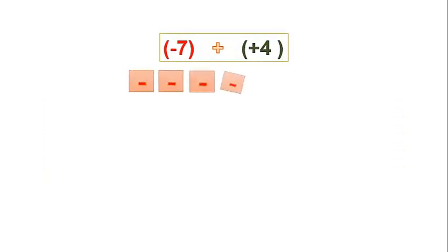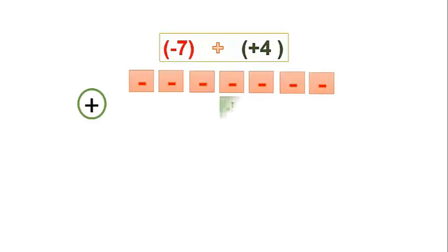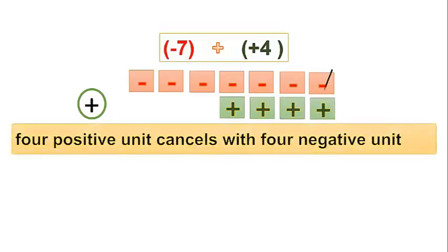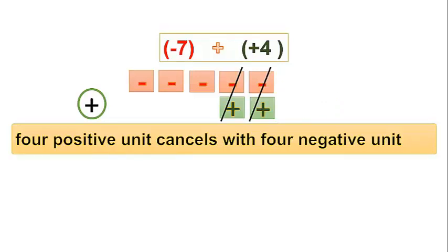Now we place 7 negative symbols and 4 positive symbols. When we add 7 units of negatives with 4 units of positives, we get a total of 3 units of negatives. Because the negative numbers are greater, the answer is a negative number. The 4 positive units cancel with 4 negative units.